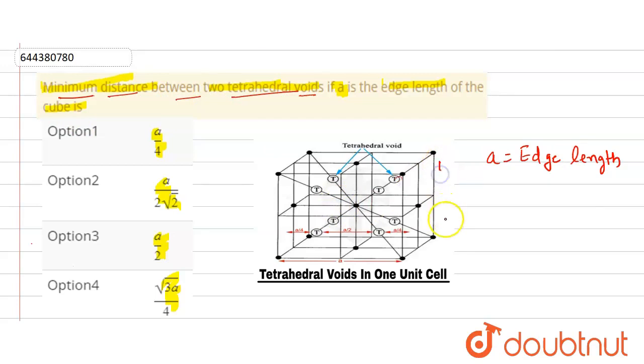This is the edge length, and this is the distance between two tetrahedral voids. If a is the edge length of the cube, then the shortest distance between two tetrahedral voids is